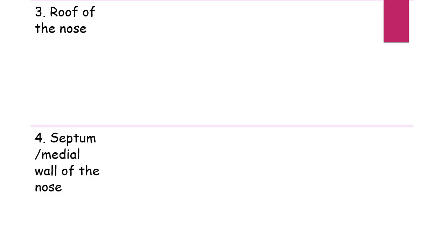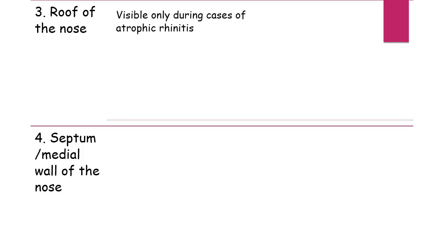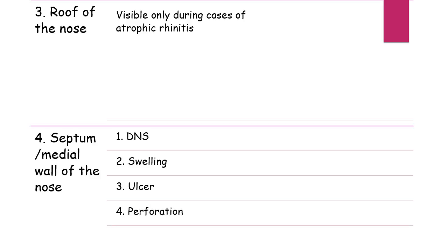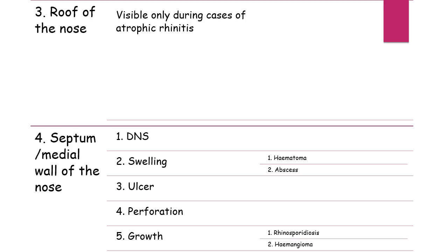The roof of the nose is not visible during normal anterior rhinoscopy — it is visible only in cases of atrophic rhinitis where the nasal cavity becomes roomy. The following pathologies can be observed in the septum or medial wall: DNS, swelling, ulcer, perforation, and growth. Possible causes of swelling are hematoma and abscess; possible growths are rhinosporidiosis or hemangioma.